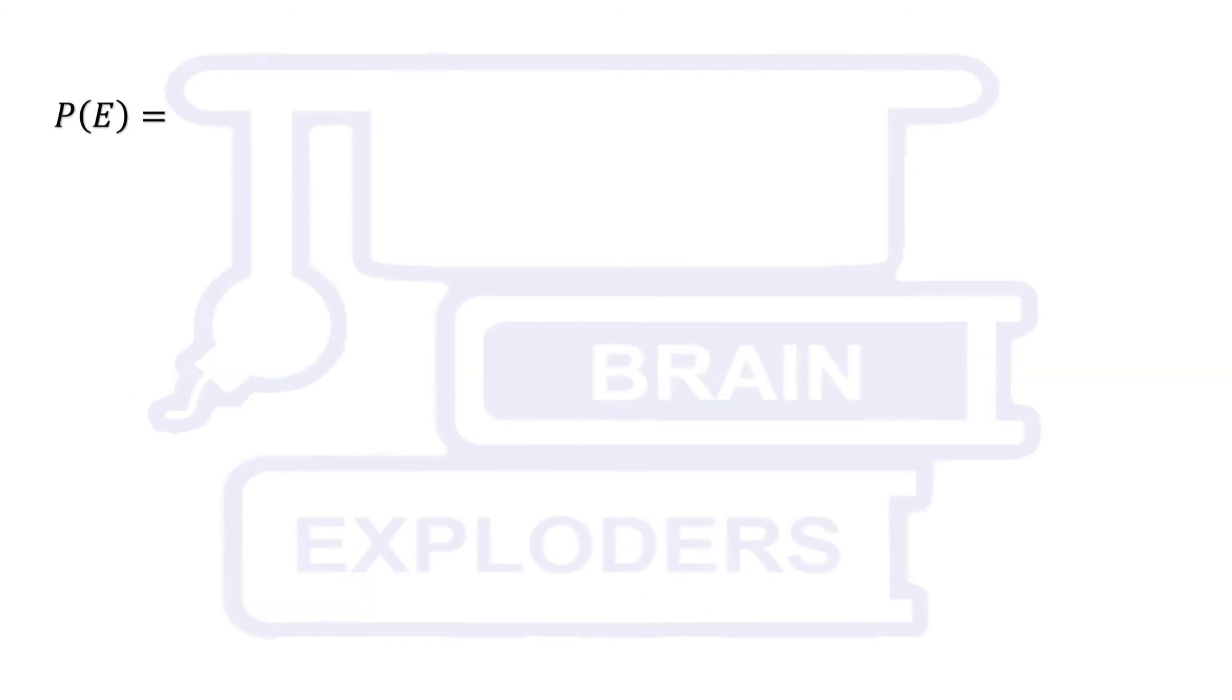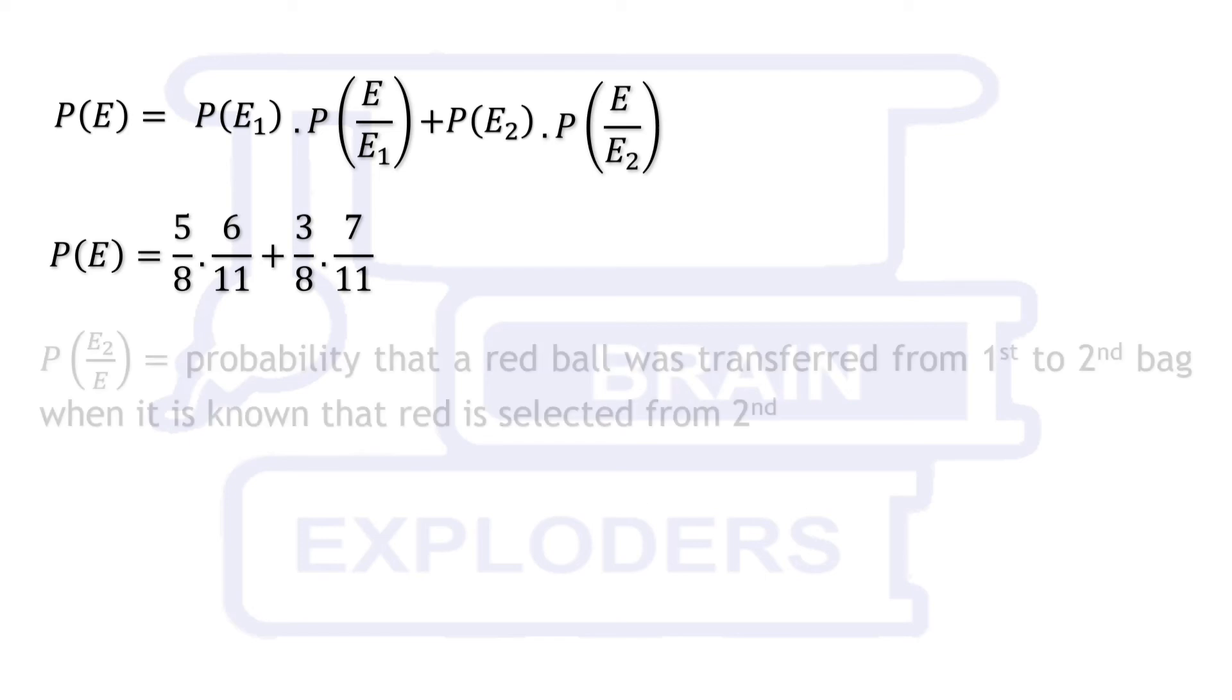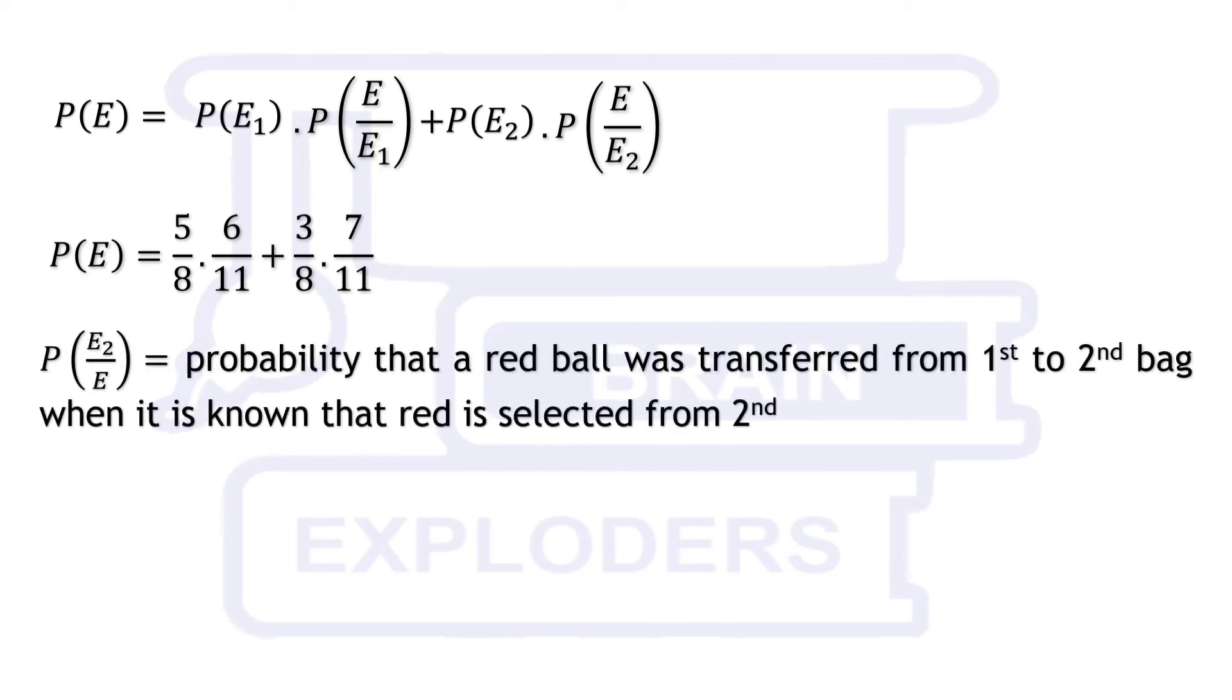Event E can occur after either E1 or E2, thus probability of E is equal to P(E1) times P(E|E1) plus P(E2) times P(E|E2). We have to calculate P(E2|E) means the probability that a red ball was transferred from first bag to second bag when it is known that red is selected from second bag.